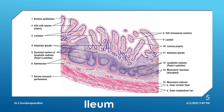Next is the slide of ileum. Here also you can make out all four layers of GIT: mucosa — consisting of lining epithelium, lamina propria, and muscularis mucosa — then submucosa, muscularis externa, and serosa. The striking feature of ileum is that in the lamina propria you can make out numerous lymphatic nodules.